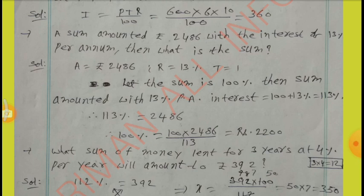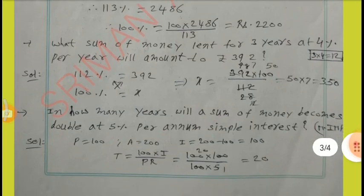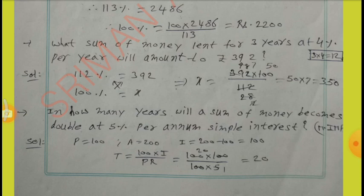By cross multiplication, we get the answer Rs.2,200. Next: What sum of money lent for 3 years at 4% per year will amount to Rs.392? Here, 3 multiplied by 4 equal to 12%, plus 100 gives 112%. So 112% equal to Rs.392. We have to find 100%. By cross multiplication, we can solve: X equal to Rs.350.